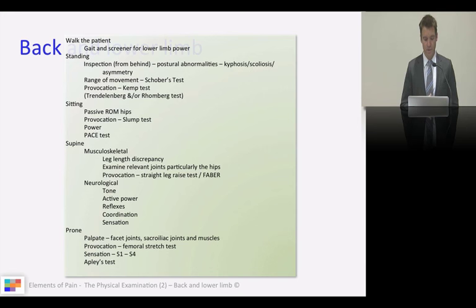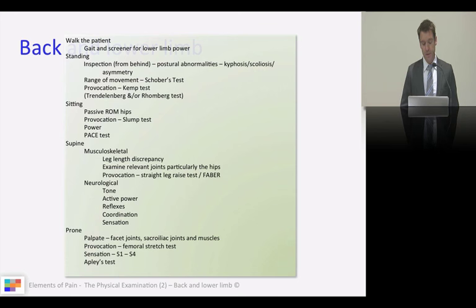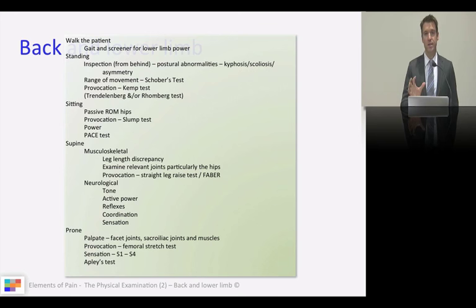In your supine and prone position, this is where the bulk of your examination is going to happen. Supine: examining the musculoskeletal system, examining the relevant joints, and not forgetting the sacroiliac joint. Then moving on to your neurological examination - tone, power, reflexes, coordination - and take your time before you jump into examining sensation and the various sensory modalities. Then prone, which is vital, particularly to me, where you can feel up and down the spine looking for deformities, assessing for joint tenderness particularly the facet joints, and of course assessing the sacroiliac joints and other muscles that may be of relevance.